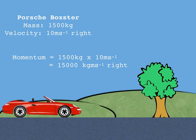So here we have a Porsche Boxster. Its mass is 1500 kilograms. In a moment it's going to be moving at 10 meters per second to the right. Got to have a direction because that's the velocity and therefore its momentum is 1500 kg times 10 m/s equals 15,000 kgm/s to the right. Remember vector quantity. So we're going to represent that with an arrow.